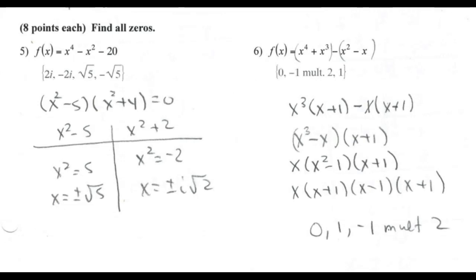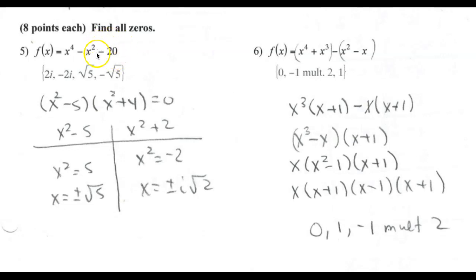Let's find the zeros of some functions that you need to factor first. Looking at number 5, this is the quadratic form — you have three terms: an x to the fourth, an x squared, and a constant term. If you can find factors of minus 20 that add up to minus 1, you can factor this.